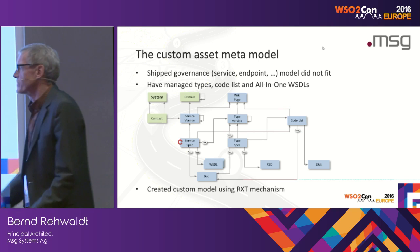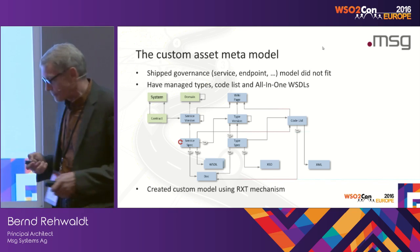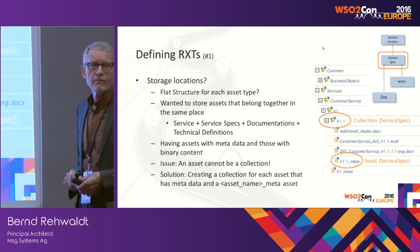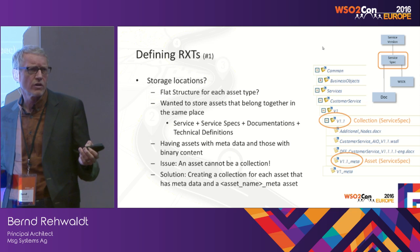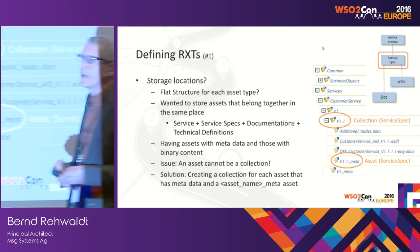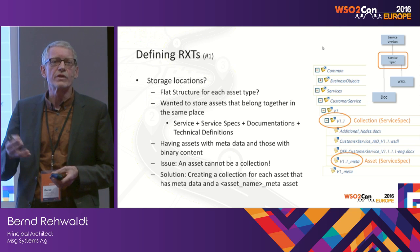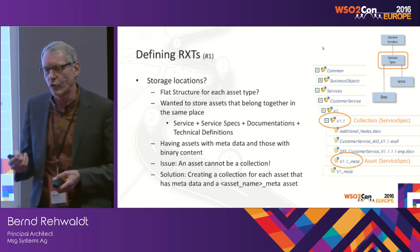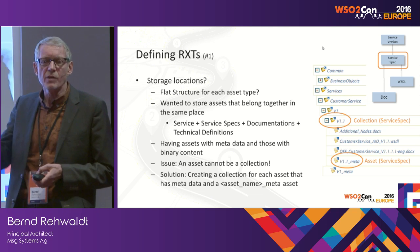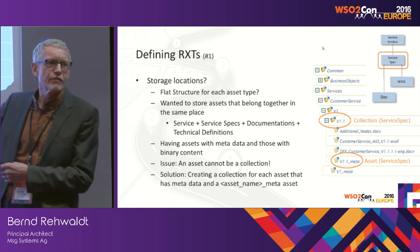Some special things we had to manage: we have managed types — a type system used across different services, like business objects and reuse of business objects. Another thing: we have code lists used widely in business objects and services. A third thing is a special concept of WSDL called all-in-one — when we deploy some service specification, we put it in one file. All the XSD schemas are included in the WSDL. Even that's not supported by Governance Registry as it works out of the box — if you try to parse that, it will fail. There were a few things that made us realize we have to build our own metamodel.